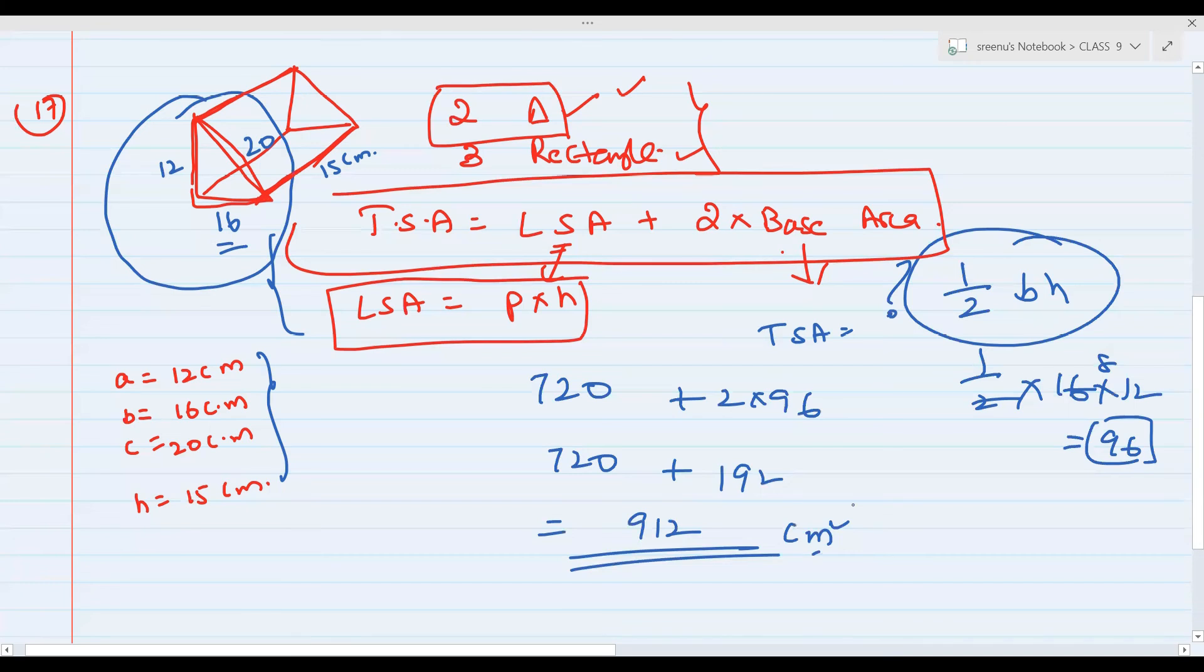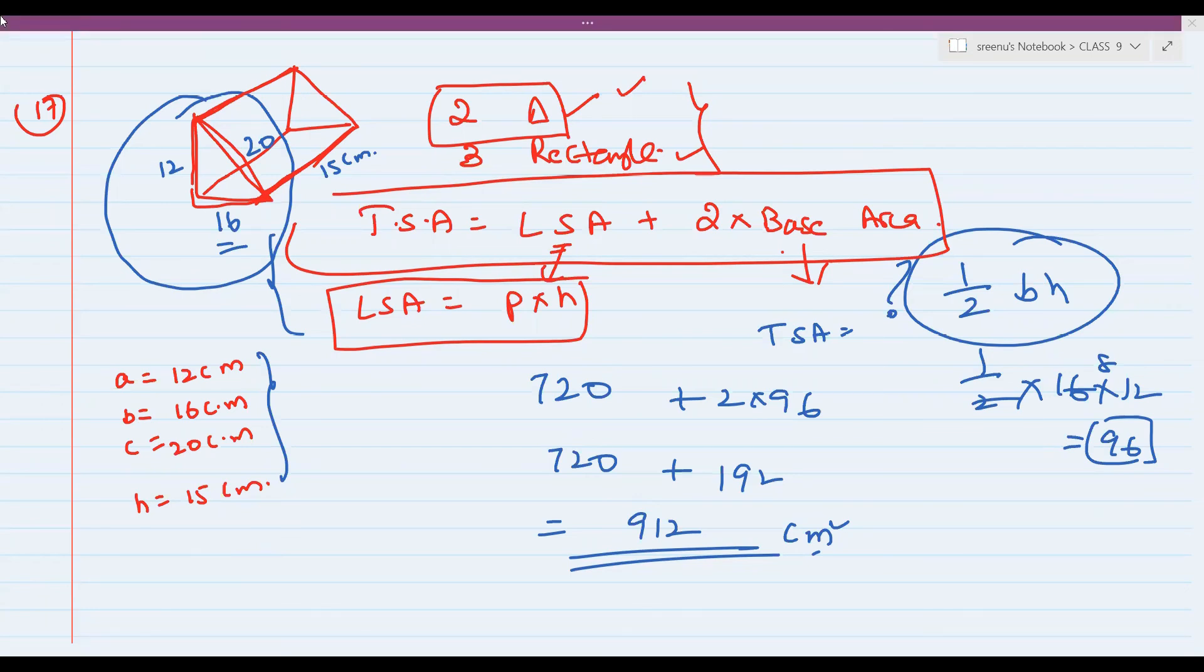In the same way, the next question is also same. 18, please try 18. Let's check this. What did you get the answer? The LSA is already given 120. Area of base is 60. 2 into 60. Very good.